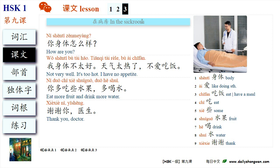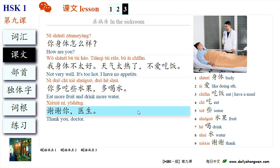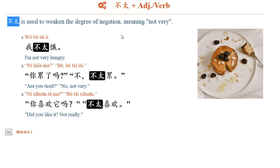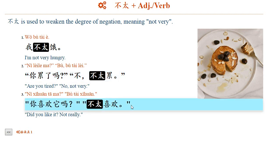在病房: 你身体怎么样? 我身体不太好，天气太热了，不爱吃饭。 你多吃些水果，多喝水。 谢谢你医生。 不太 is used to weaken the degree of negation, meaning 'not very.' For example: 我不太饿。 你累了吗? 不太累。 你喜欢他吗? 不太喜欢。